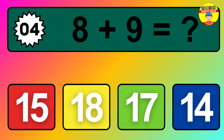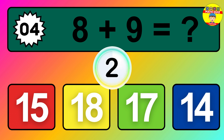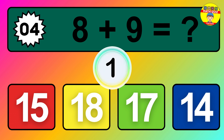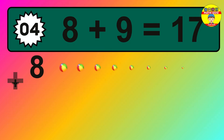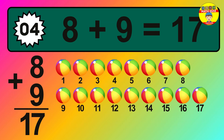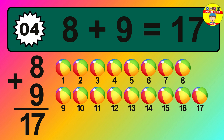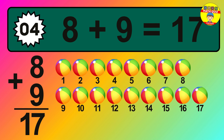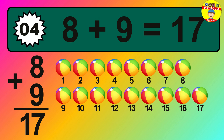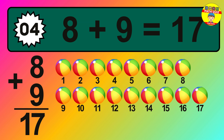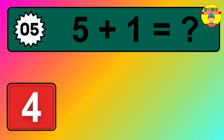Question 4. 8 plus 9 equals what? So the answer is 8 plus 9 is 17. Let's count it: 1, 2, 3, 4, 5, 6, 7, 8, 9, 10, 11, 12, 13, 14, 15, 16, 17.